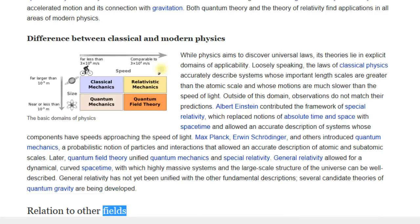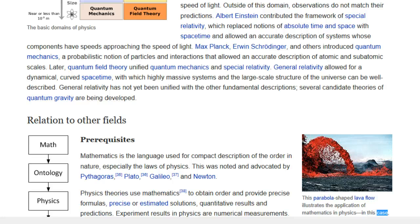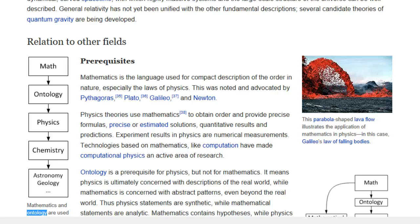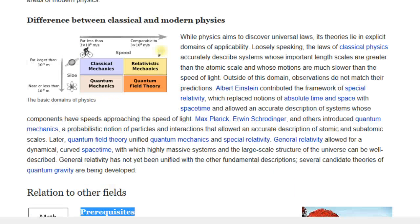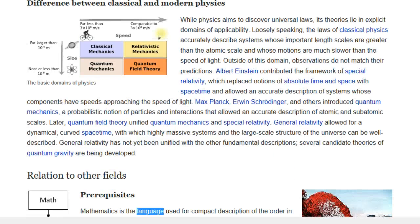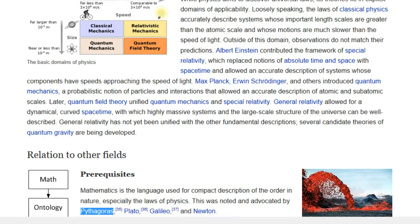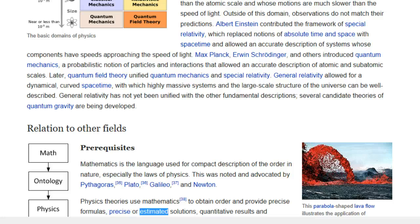Relation to other fields. This parabola-shaped lava flow illustrates the application of mathematics in physics. In this case, Galileo's law of falling bodies. Mathematics and ontology are used in physics. Physics is used in chemistry and cosmology. Prerequisites. Mathematics is the language used for compact description of the order in nature, especially the laws of physics. This was noted and advocated by Pythagoras, Plato, Galileo, and Newton. Physics theories use mathematics to obtain order and provide precise formulas, precise or estimated solutions, quantitative results, and predictions.